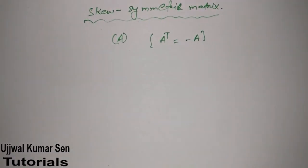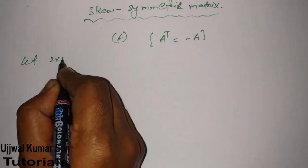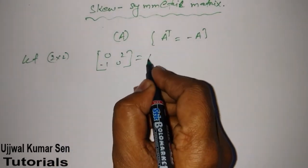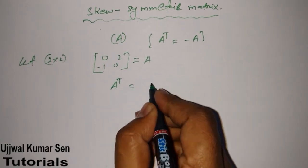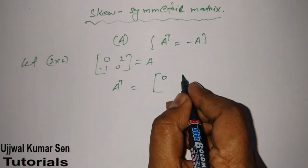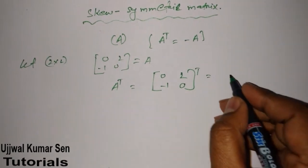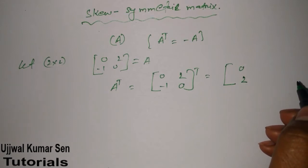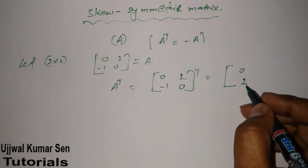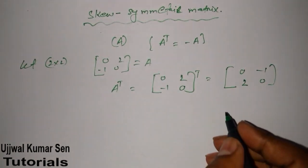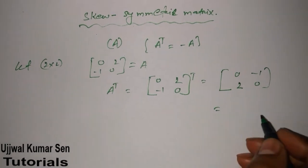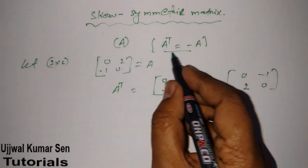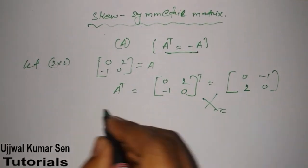Let's take an example of a two by two matrix. Suppose that we have the matrix A equal to [0, 0; -1, 2]. When we do the transpose of this matrix, rows become columns, giving us [0, -1; 2, 0]. Can you say this is a skew symmetric matrix — is it following the rule? No, so that means this matrix is not a skew symmetric matrix.